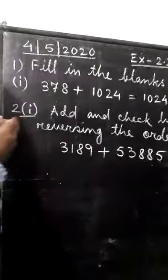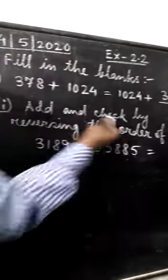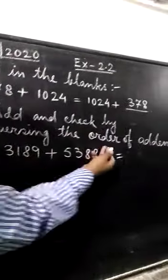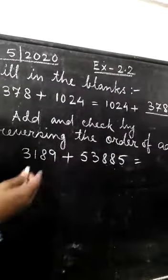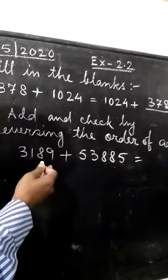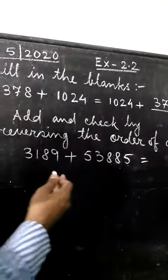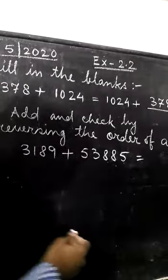Now, question number 2, the first one. Add and check by reversing the order of addends. You have to add these two numbers and you have to check whether your answer is correct or not by reversing the order of the addends. Now, let us add these numbers.